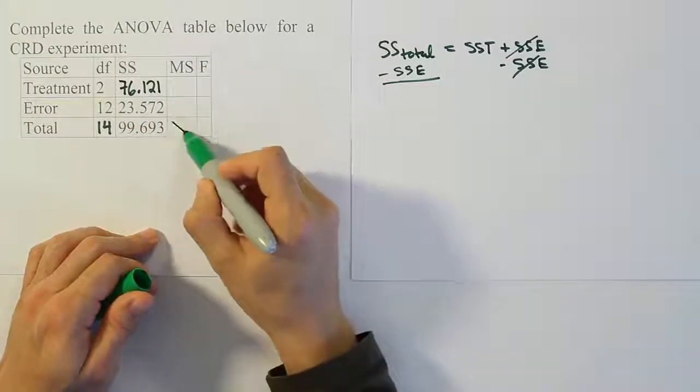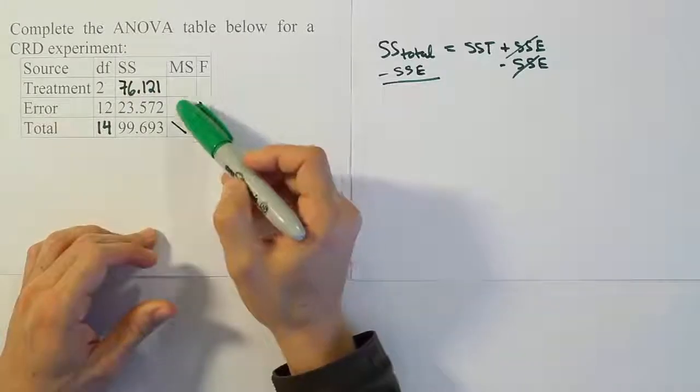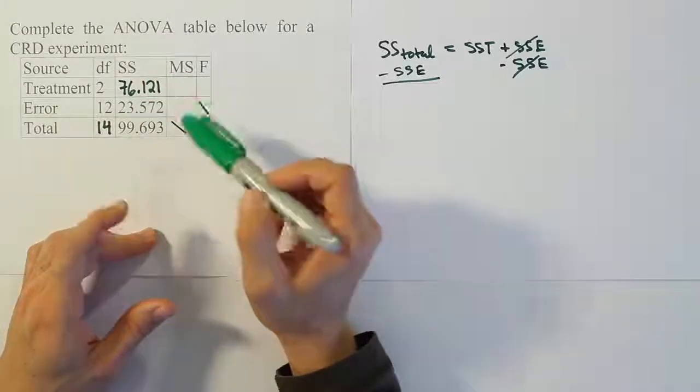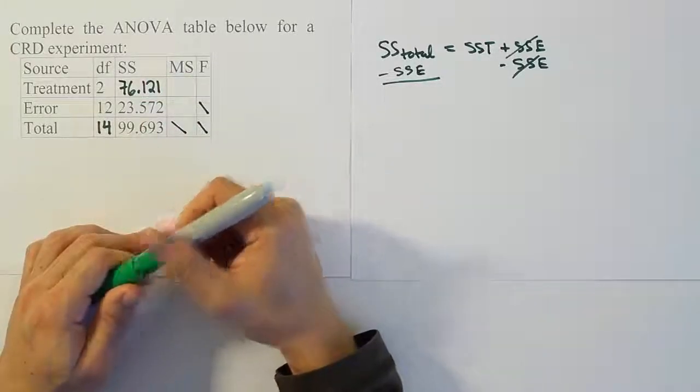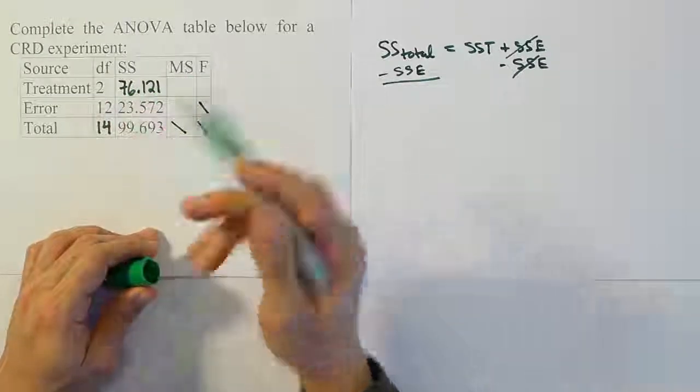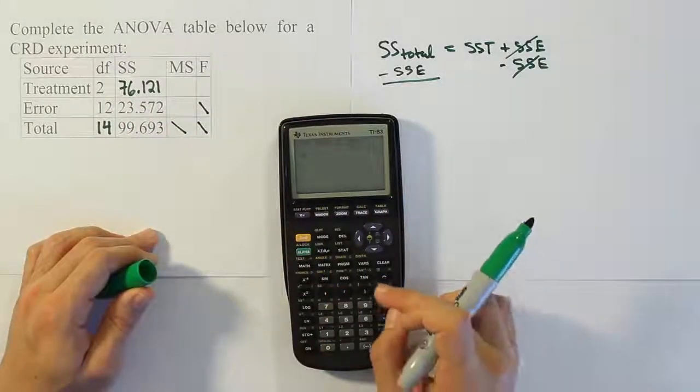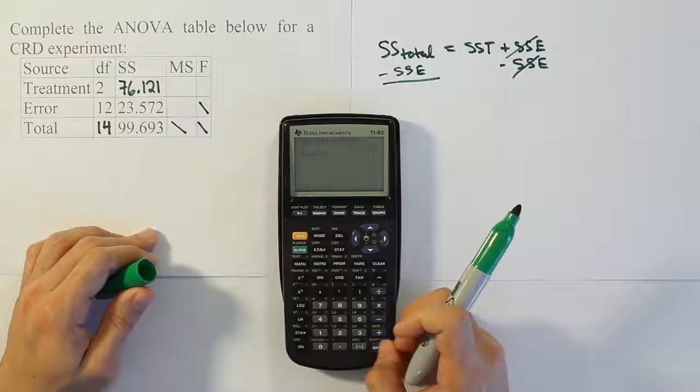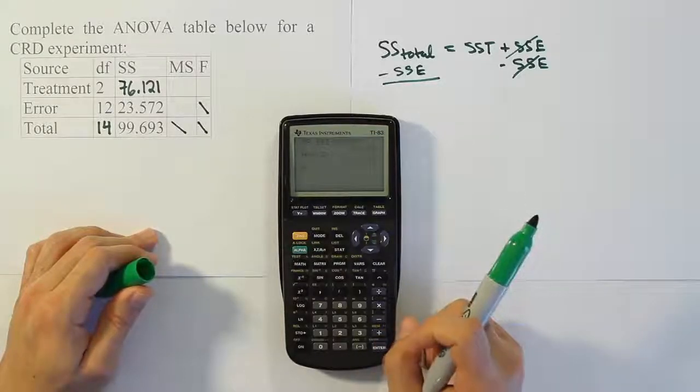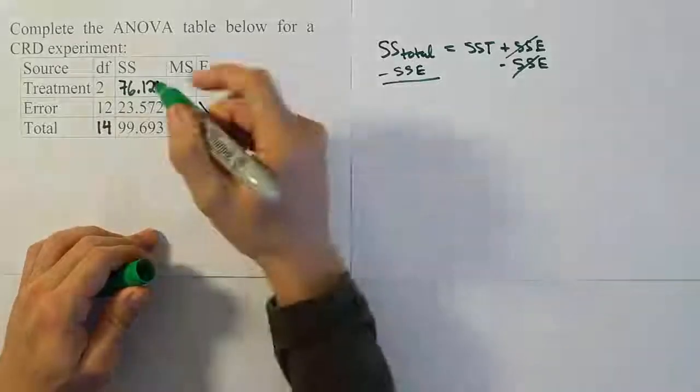Now from here, we do not need to fill out this lower little three sets of boxes, but we do need to have MSE and MST, and then the F value. So, in order to get MST, we have to divide the SST by its degrees of freedom. So, we need to take half of 76.121. We're going to divide 76.121 by 2, and we get 38.1.